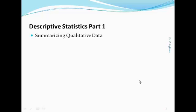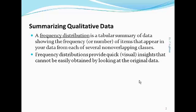Summarizing qualitative data. Frequency distributions are often used to summarize qualitative data. A frequency distribution is a tabular summary showing the number of items that appear in your data from each of several non-overlapping classes.